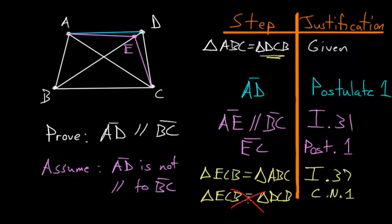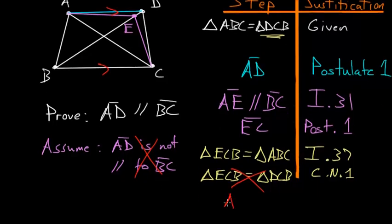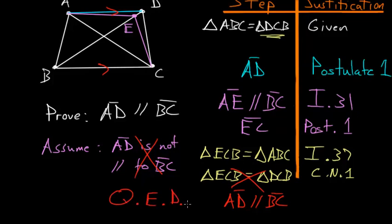And if these can't be equal, that implies that our assumption is wrong, that AD is not parallel to BC. And if that's wrong, that means we're left with only one conclusion: that the line AD must be parallel to the line BC. So let's write that, that AD is parallel to BC. And we can end with QED.